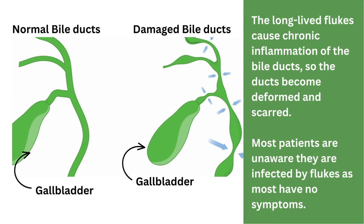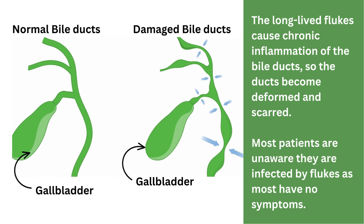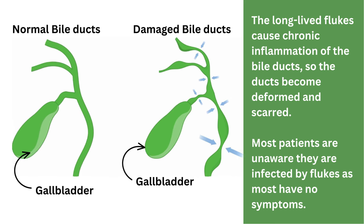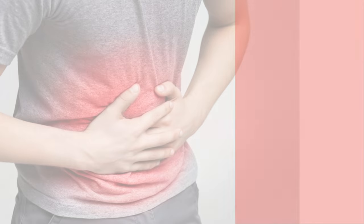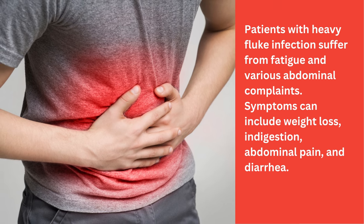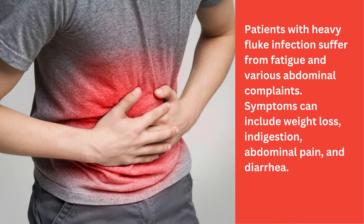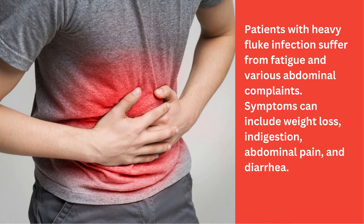The long-lived liver flukes cause chronic inflammation of the bile ducts so the ducts become deformed and scarred. Most patients are unaware they are infected by flukes as most have no symptoms. Patients with heavy fluke infection suffer from fatigue and various abdominal complaints. Symptoms can include weight loss, indigestion, abdominal pain, and diarrhoea.